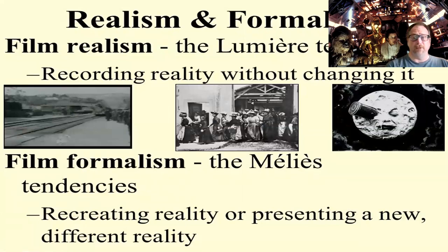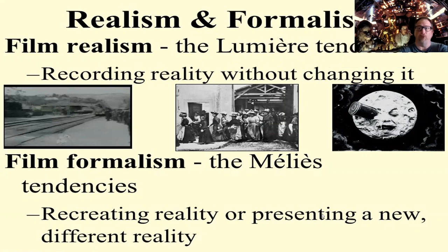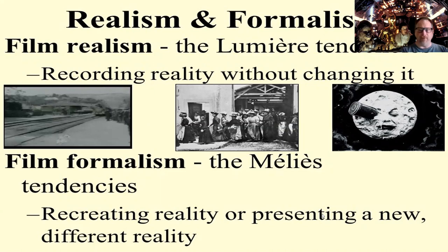Realism and formalism are really the two ends of the poles. When we talk about film realism, there's no better place to start than the Lumiere brothers, specifically the Arrival of a Train — kind of the birthing of the film industry as we know it for public consumption. The more real a film is, the more it records reality without changing it. The best way of looking at a realist film is a still camera locked in place with no editing. That's a true realist film, and very seldom do we have those.